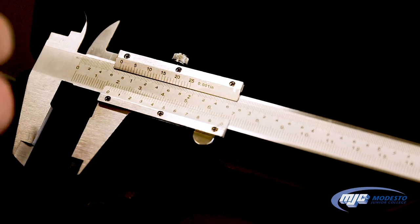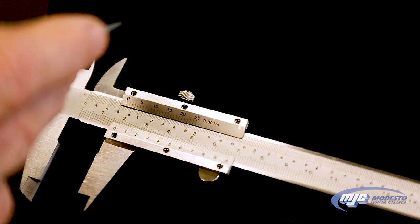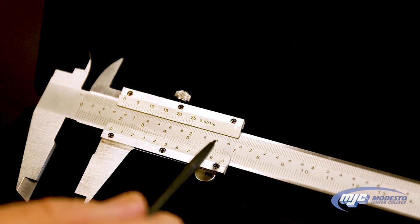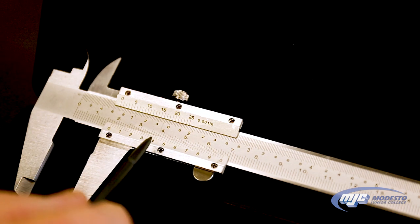Once we've locked the jaws and taken out what we're measuring, the first thing to know is that there's two scales on these calipers. The top scale is in inches, the bottom is in centimeters. We will always use the bottom scale in centimeters.